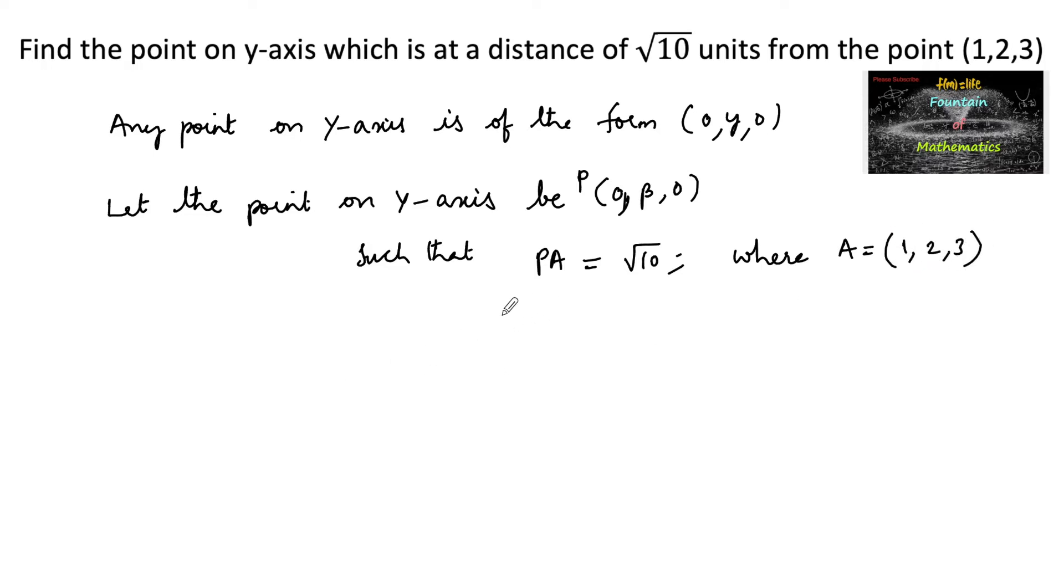So, by using the distance formula or squaring on both sides, we have PA square is equal to 10, and we know the distance between two points.